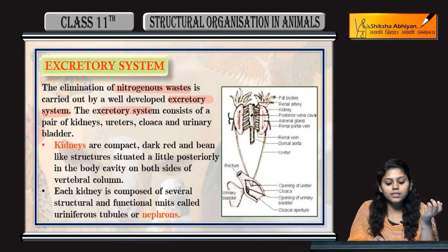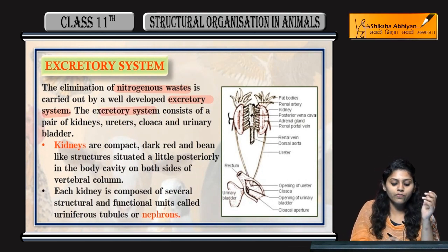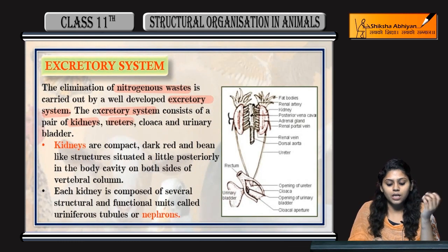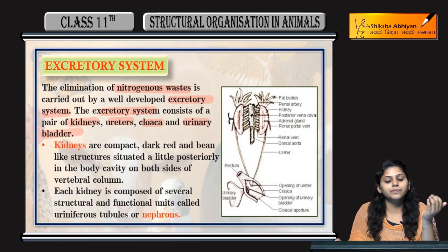Excretory system mainly consist hoota hai of a kidney pair, ureters, cloaca, and urinary bladder.